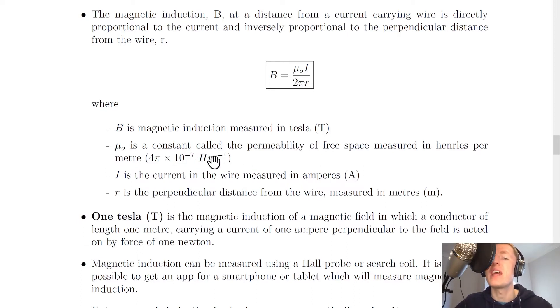This is on the data sheet in your exam. I is the current in the wire measured in amperes and R is the perpendicular distance from the wire measured in meters.